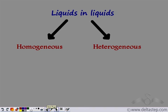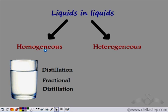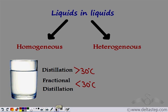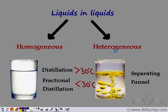So let's revise what we have studied. We have a liquid-liquid mixture which can be homogeneous or heterogeneous. For a homogeneous mixture, we separate the two liquids using distillation or fractional distillation — distillation when the boiling point difference is greater than 30°C, and fractional distillation when it is less than 30°C. For a heterogeneous mixture, we use a separating funnel, which marks a clear distinction between the heavier and the lighter liquid. This is how we use different separation techniques for a liquid-liquid mixture.